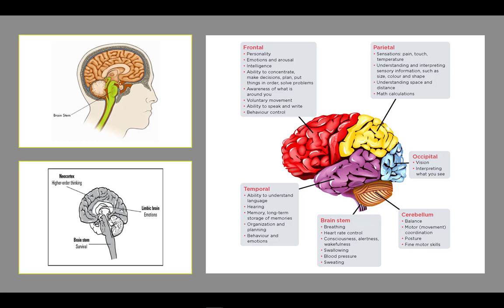The symptoms of a brainstem stroke are more serious and complex than other types. The brainstem is responsible for controlling all the basic activities of the central nervous system, such as consciousness, breathing, blood pressure, swallowing, speech, heartbeat, eye movements, and hearing. Therefore, a brainstem stroke poses danger to important body functions, making it a life-threatening condition.